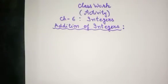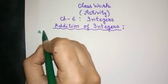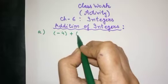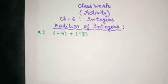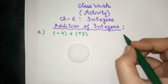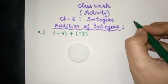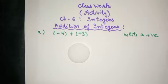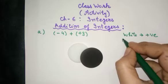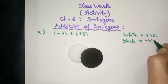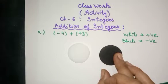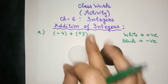Let's start the activity. Let us take the first example: minus 4 plus 3. Here, consider the white carom coin as positive numbers and the black carom coin as negative numbers.